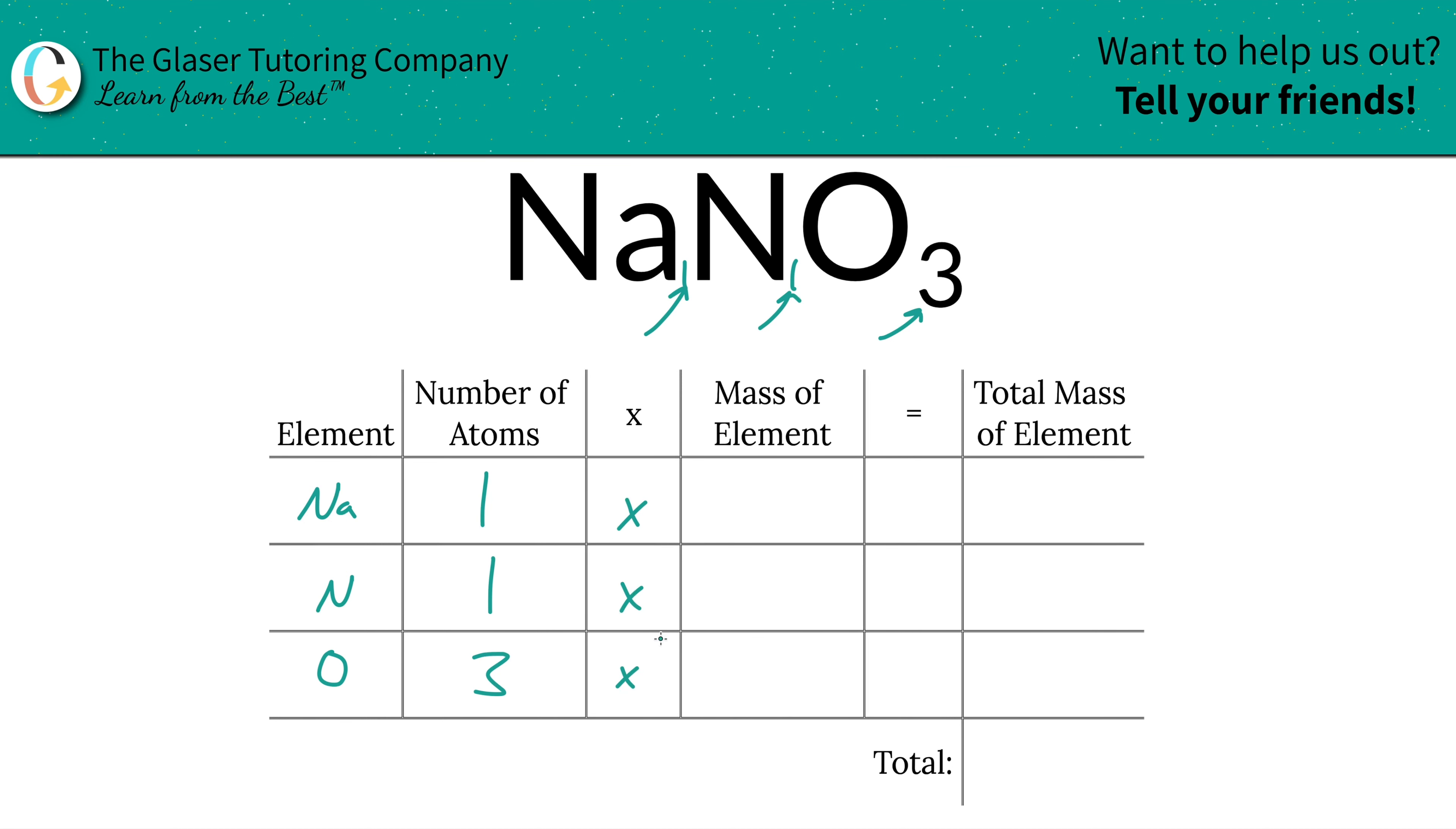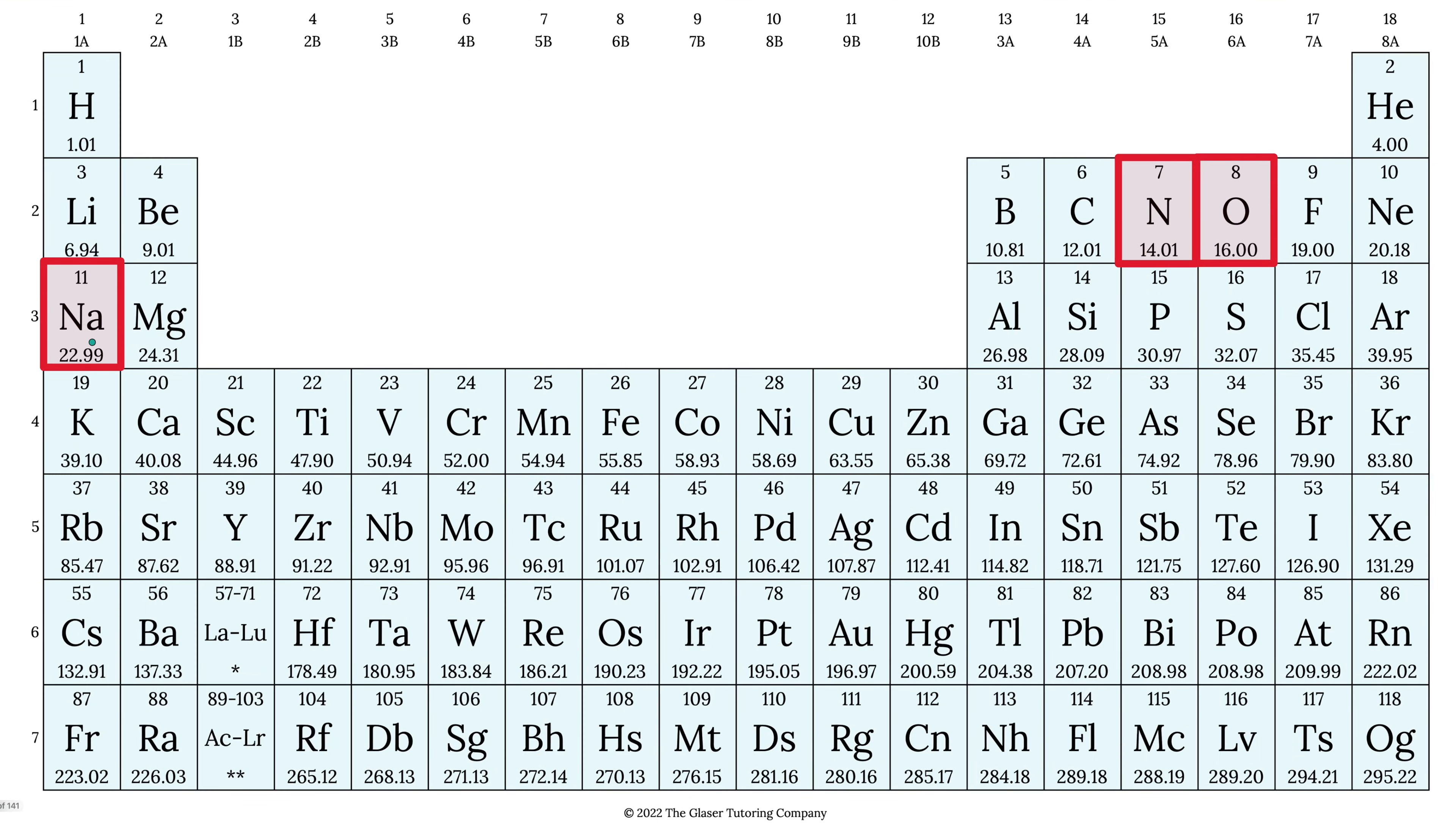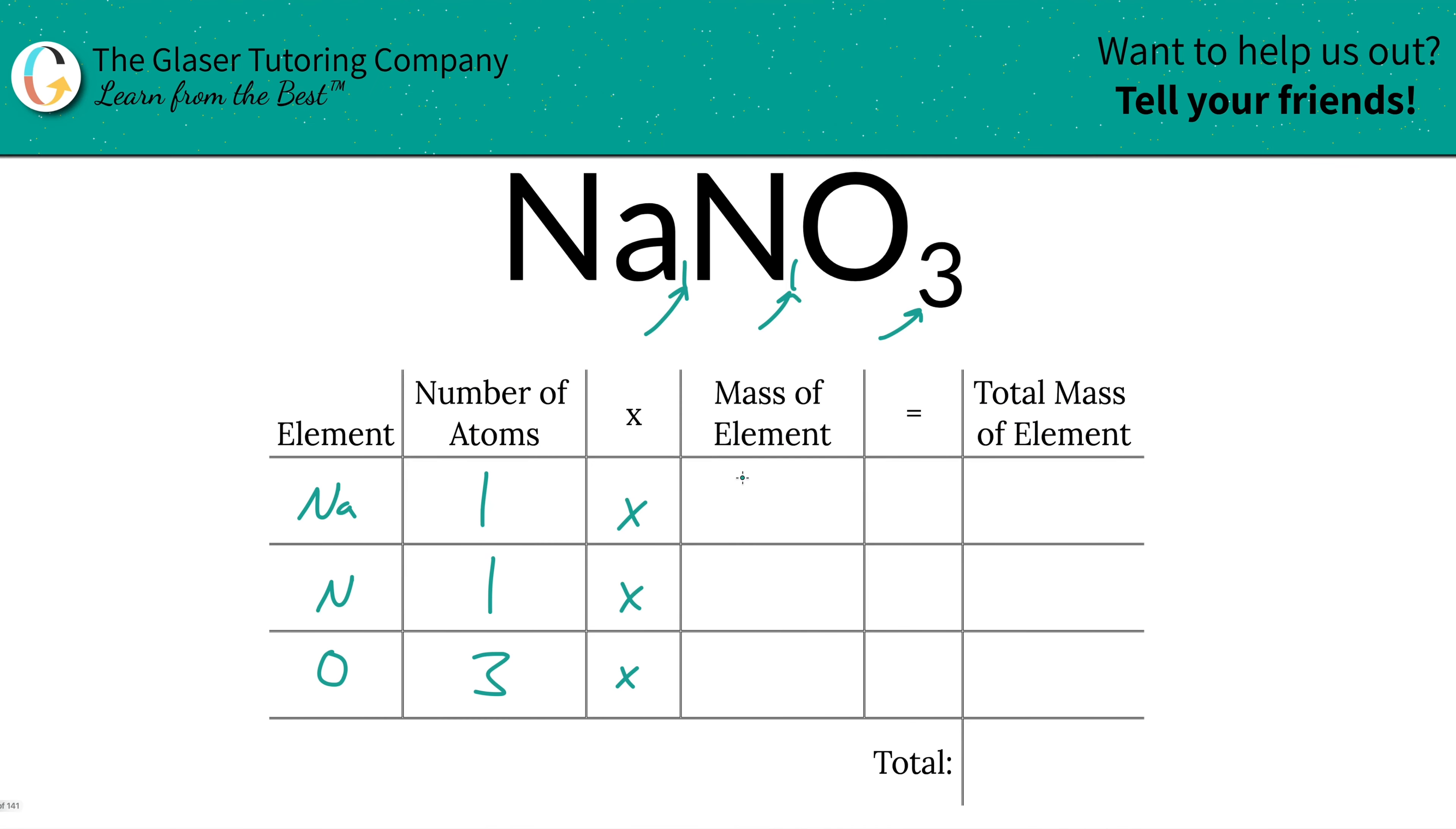We're then going to take the number of atoms and multiply it by the mass of each element. That's where the periodic table comes into play. Sodium's mass is 22.99, nitrogen is 14.01, and oxygen is 16.00. So we write down 22.99 for sodium, 14.01 for nitrogen, and 16.00 for oxygen.